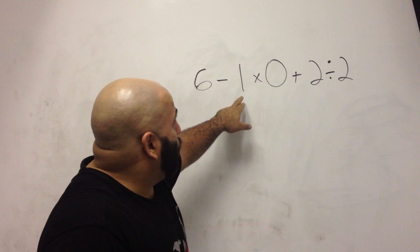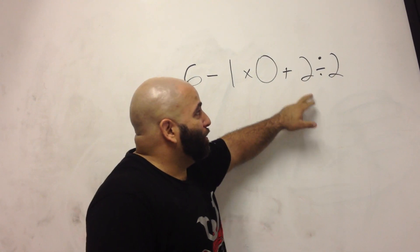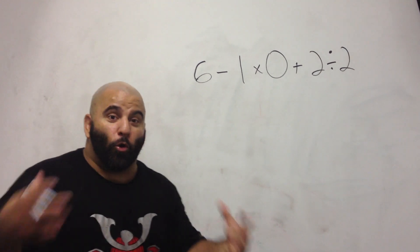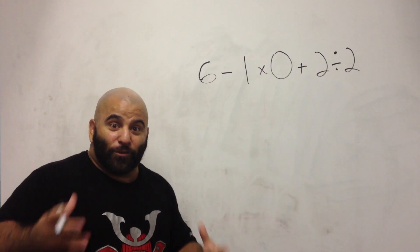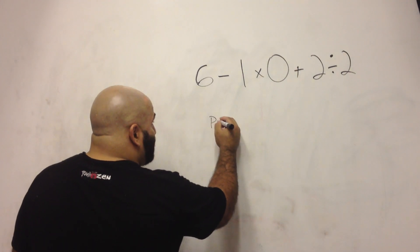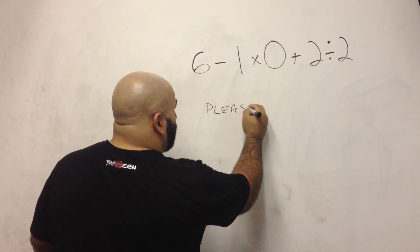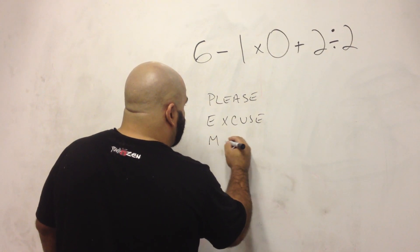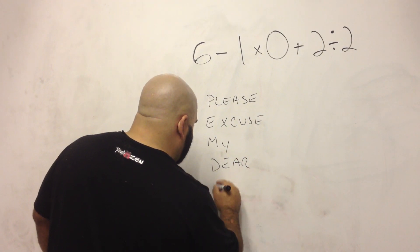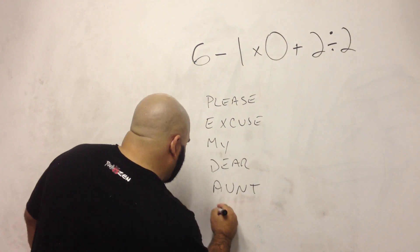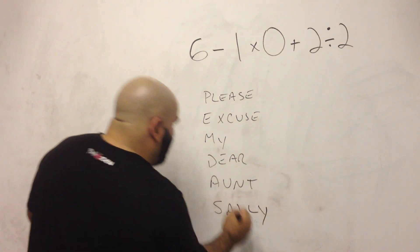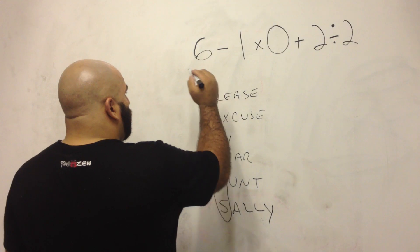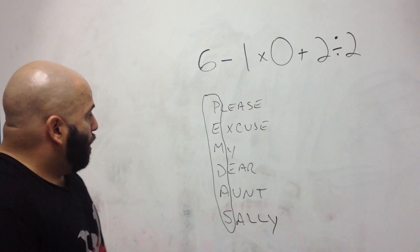So: 6 minus 1 times 0 plus 2 divided by 2. In order to solve this basic math problem, we go to what's called order of operations. The easy way to remember the order of operations is "Please Excuse My Dear Aunt Sally." That helps us remember the acronym. Some of us that are more comfortable with math remember PEMDAS.